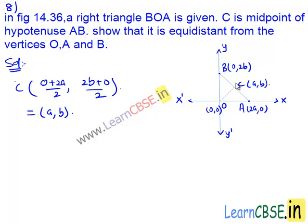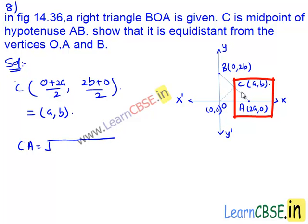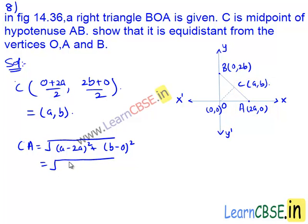Now let's find the length CA. CA equals the square root of (a minus 2a) whole square plus (b minus 0) whole square, which is equal to the square root of (minus a) whole square plus b square, that equals the square root of a square plus b square.